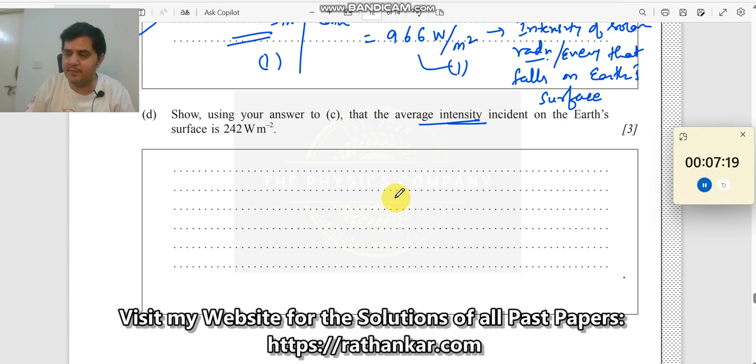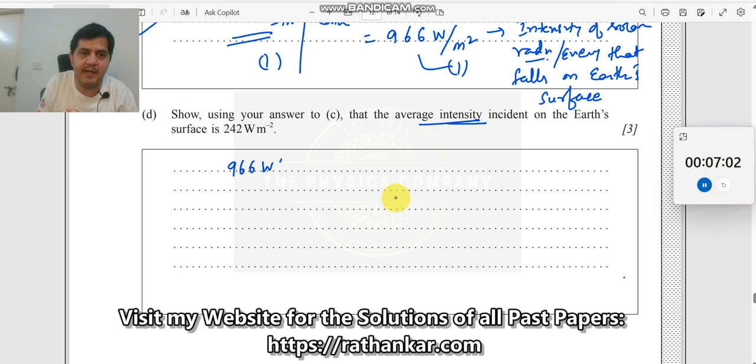The next thing we did was, now we are not looking at the solar panel but instead we are asking about what is the average intensity incident on the earth's surface. When you take about average you need to take the full earth over here.